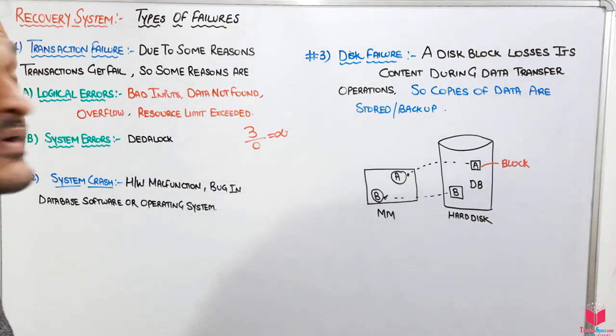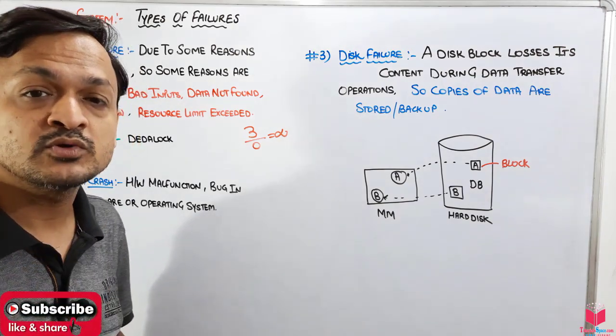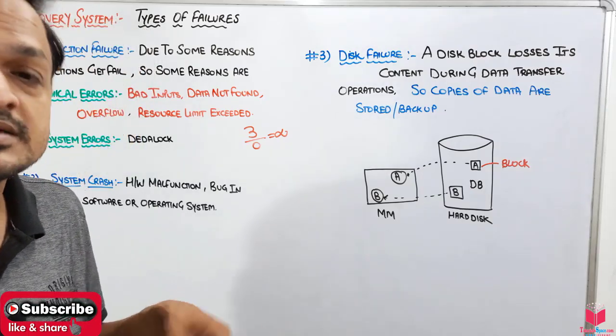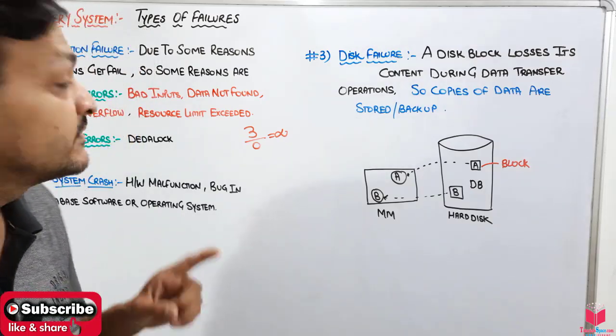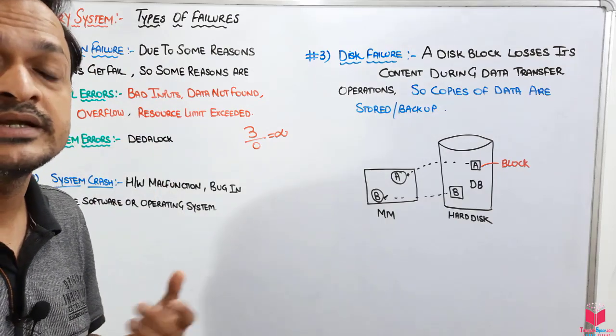That means system will give you the result in infinity, so this system will be in a problem state. Then after, we have data not found. Data not found means the variable is not found. If a transaction wants some data variable and that variable is already deleted by some other transaction, that means that transaction will stop its working because it needs its data item.